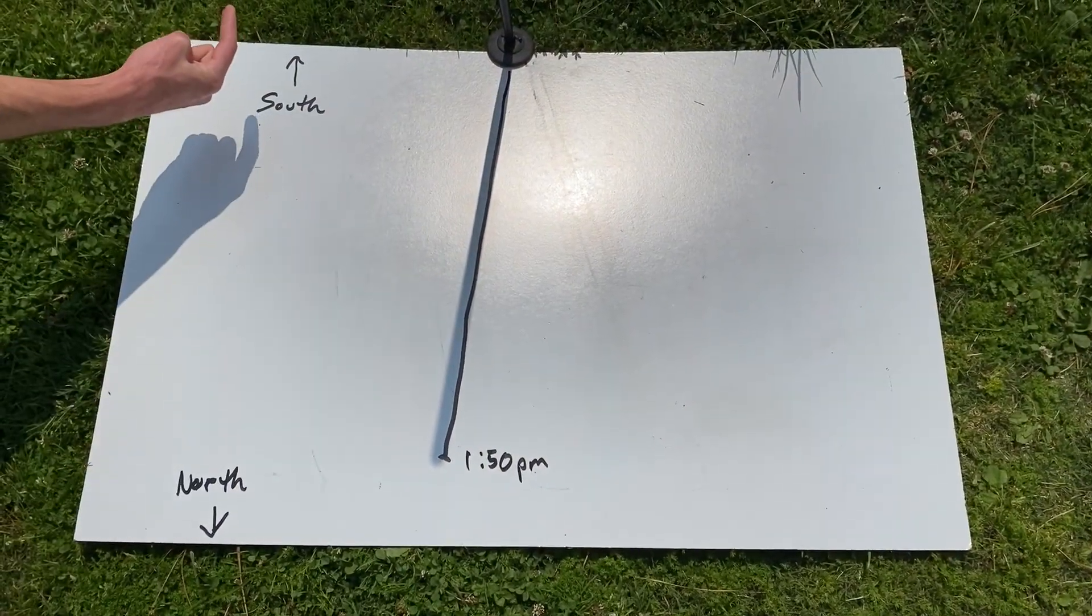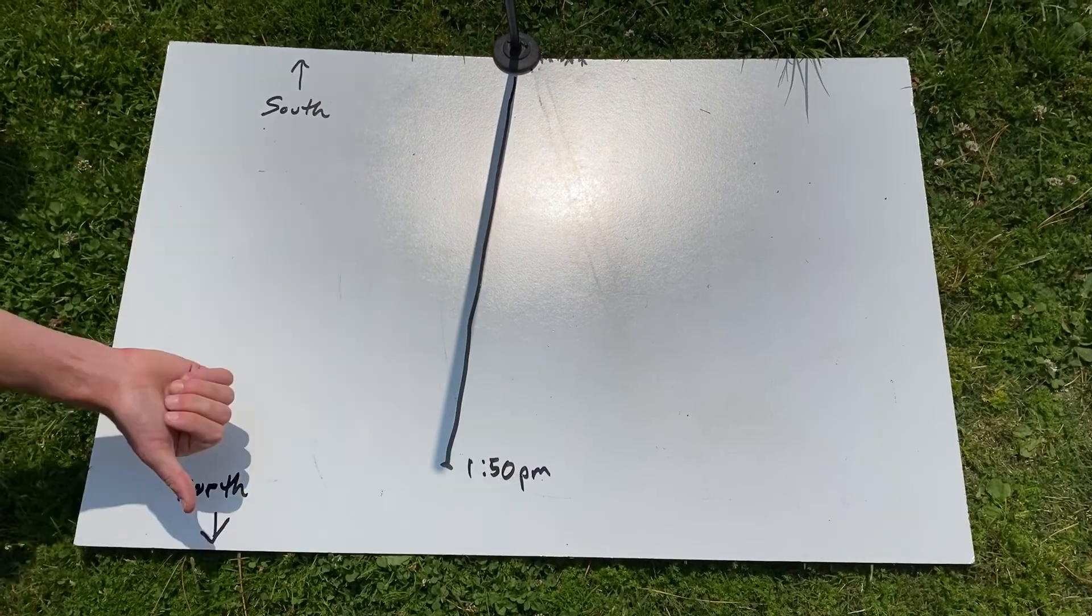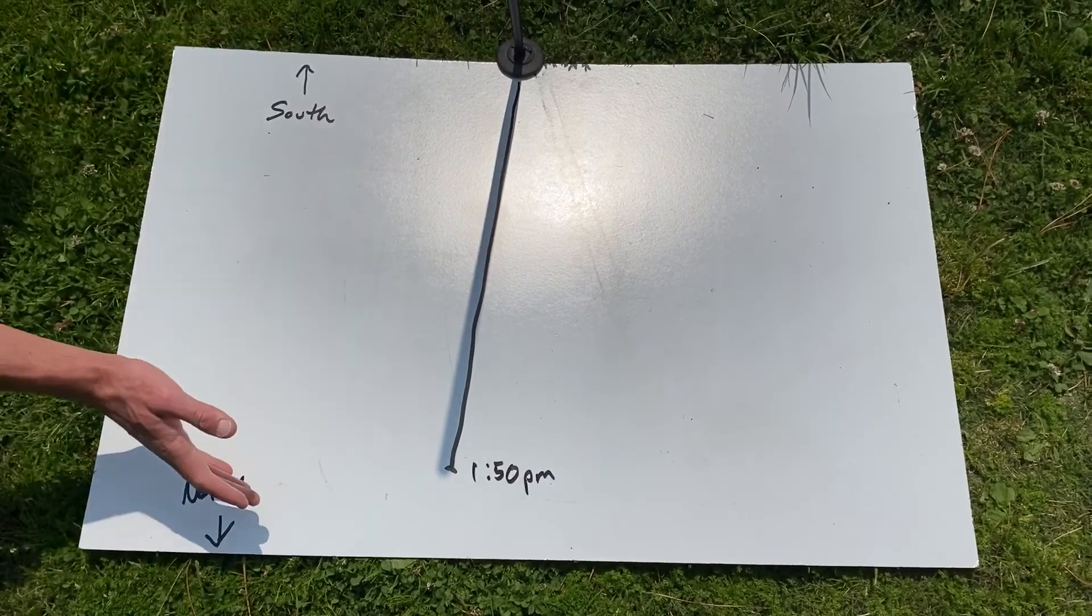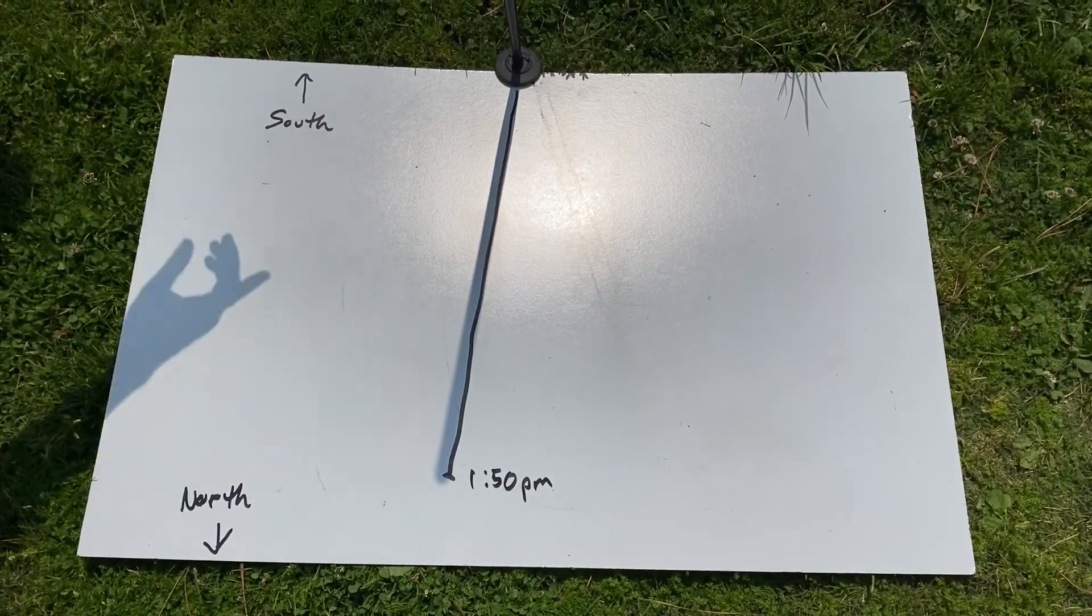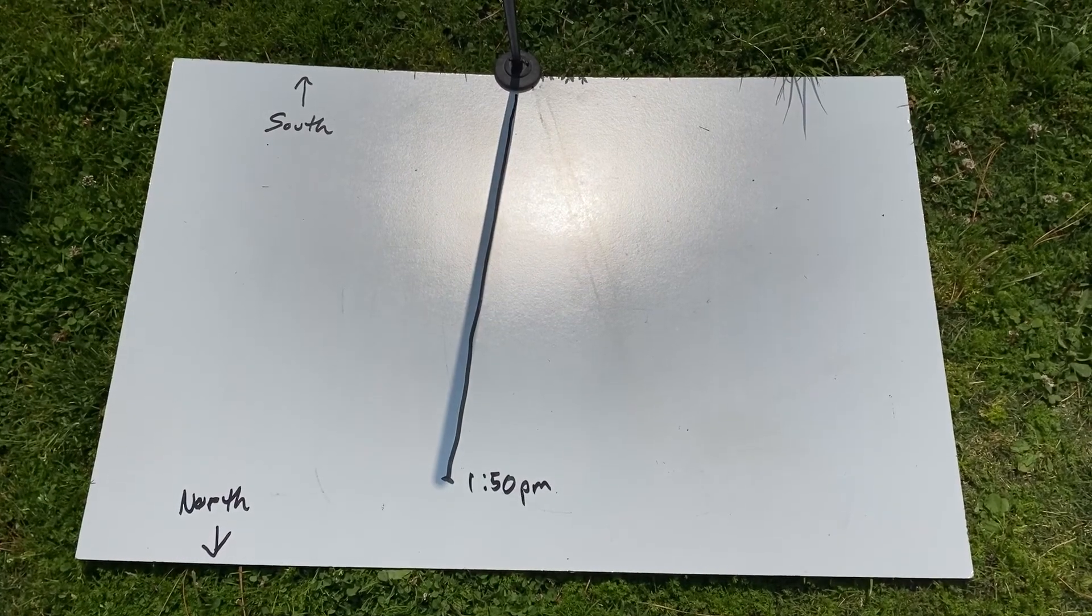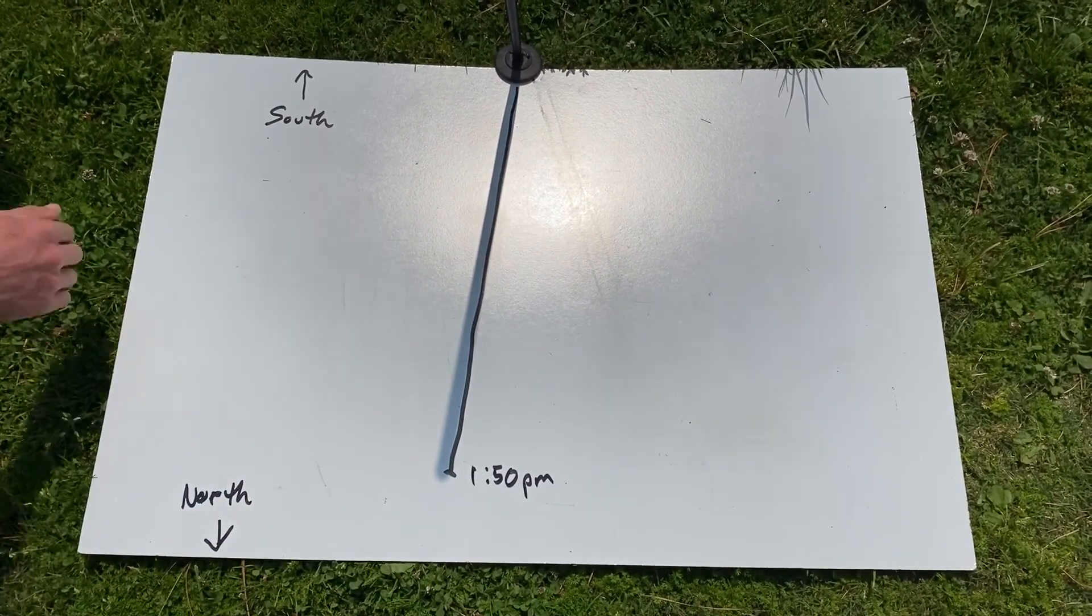This direction is to the south, where the Sun is. This direction is to the north. The shadow is on the north side of the stick, and that means the shadow is a little bit to the east.